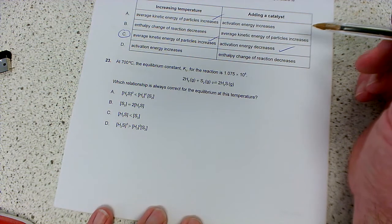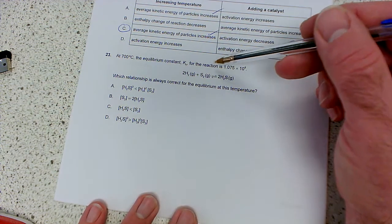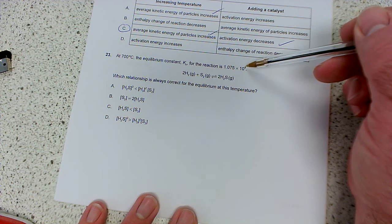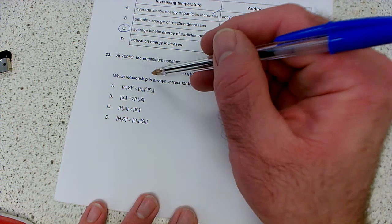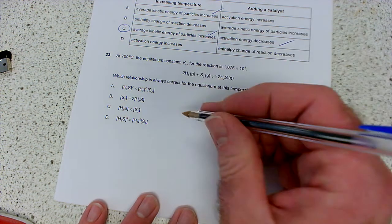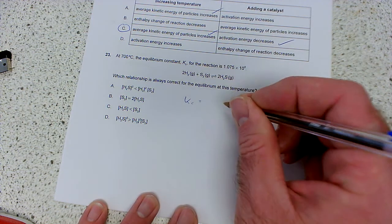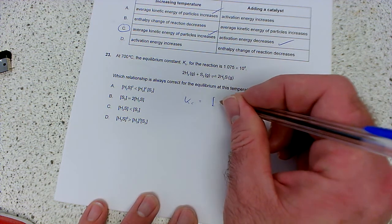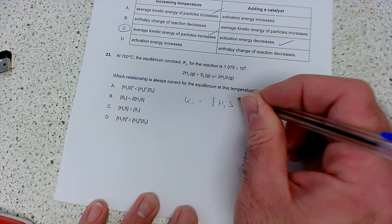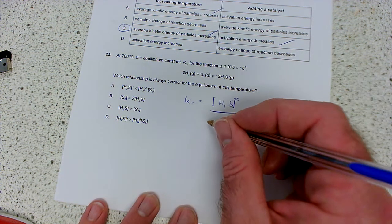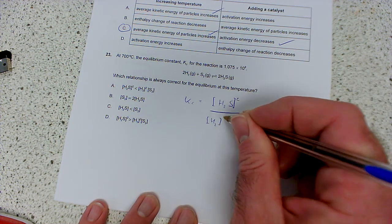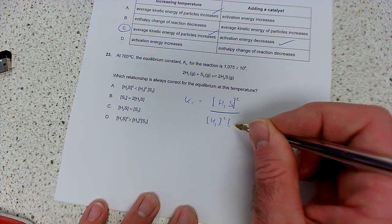On to equilibrium. At 700 degrees C, the equilibrium constant Kc for the reaction is 1.075 times 10 to the 8. That's quite a big number. There's the reaction. So which relationship is always correct? So it'll help us if we draw the equilibrium law where Kc is the products. So it'll be hydrogen sulfide squared because there's two of them. Divided by the concentration of the reactant. So that would be hydrogen squared times the concentration of S2.